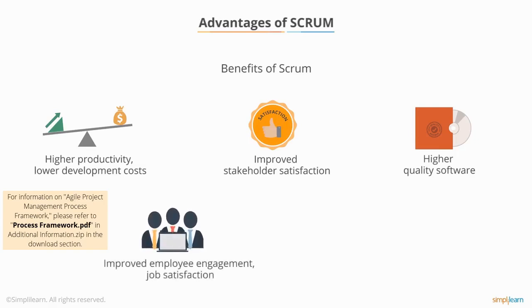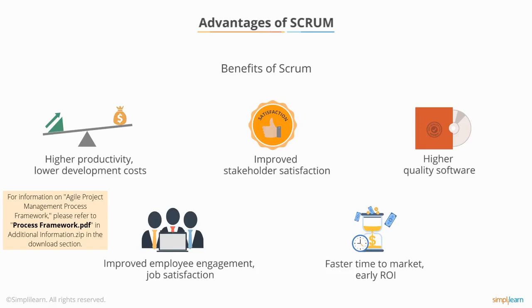Improved employee engagement and job satisfaction — by empowering a team to be self-organizing, the team is able to determine how it is going to deliver value to the customer and establish a sustainable pace. Faster time to market and early ROI — by incrementally delivering value, or working software, to the customer in short iterations, working software can be deployed sooner and the customer can realize early return on investment.